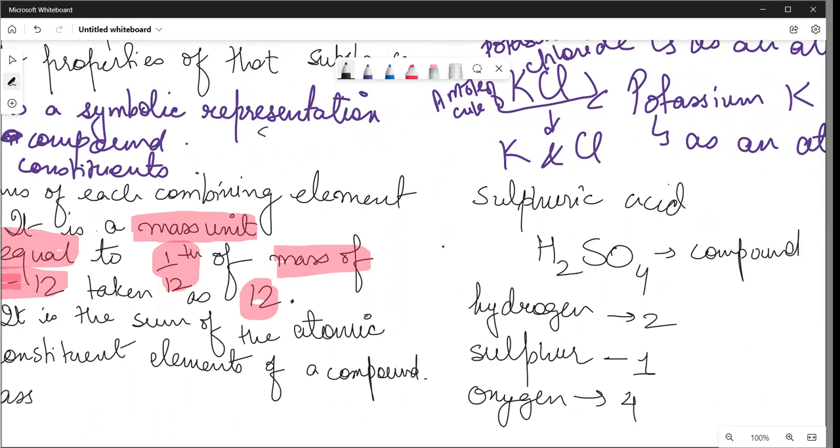So now, if this molecule is a compound, when it comes to mass what do we say? Molecular mass. Now listen, one hydrogen mass is 1, one sulfur mass is 32, and one oxygen mass is 16. How do I know?